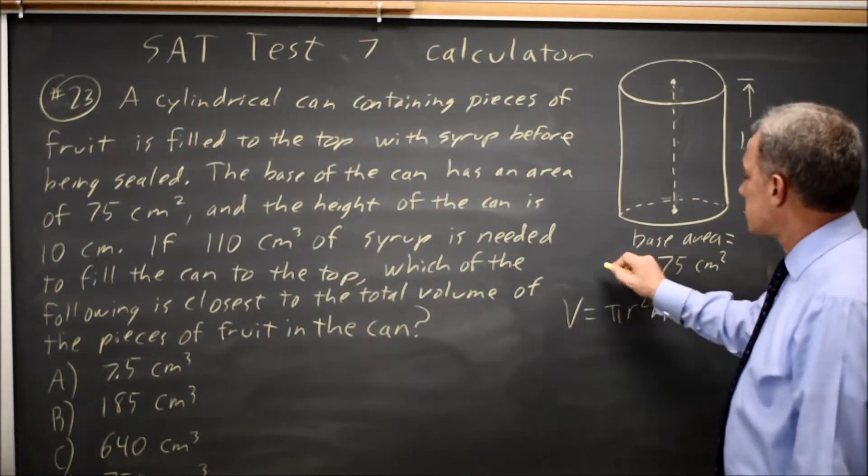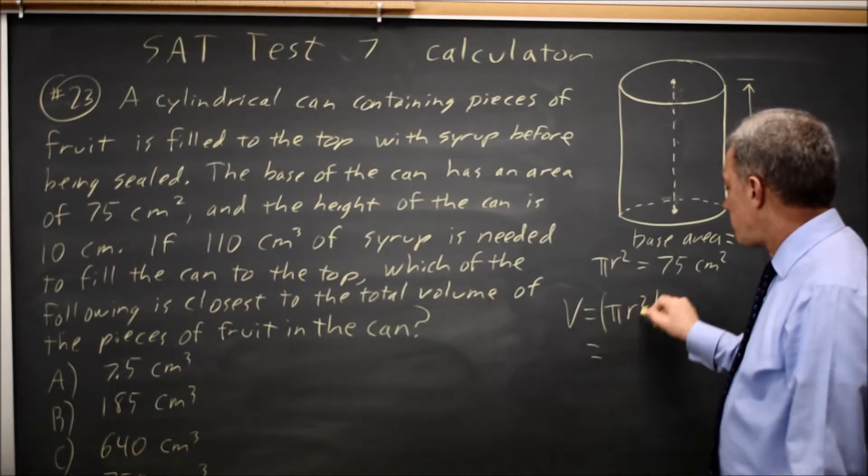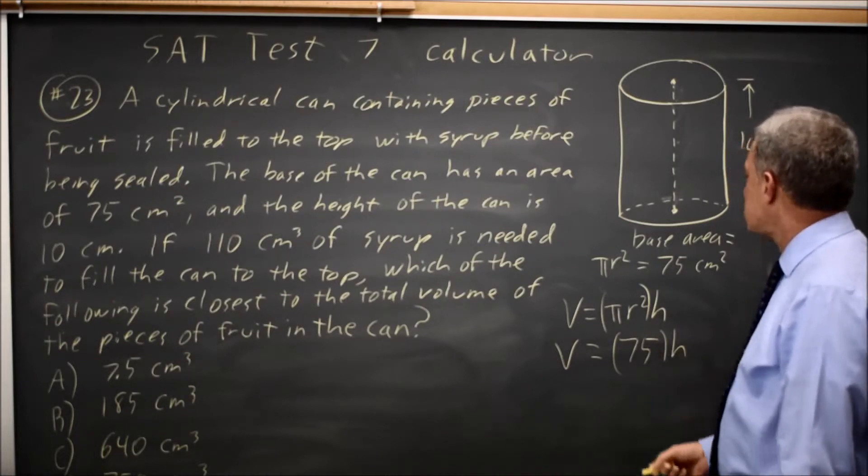The area of the base is also pi r squared, so the pi r squared here is 75. The volume is 75 times h.